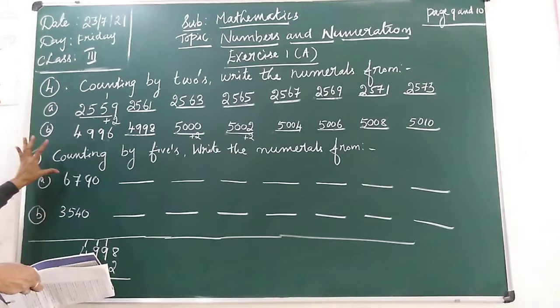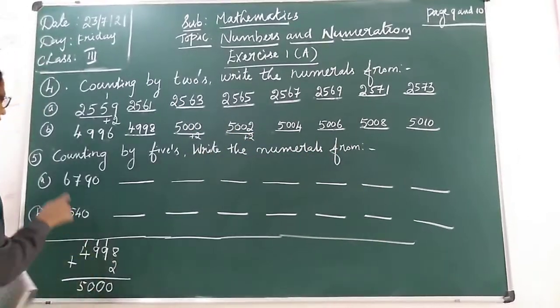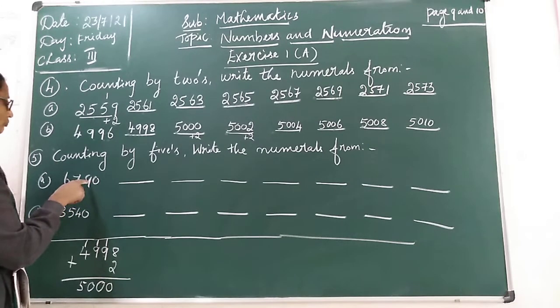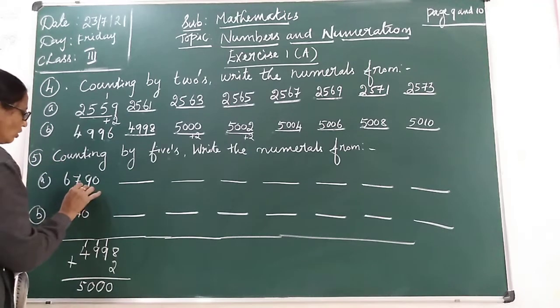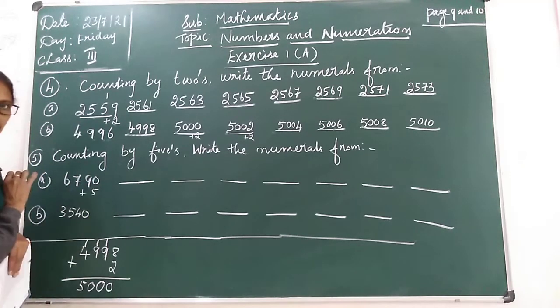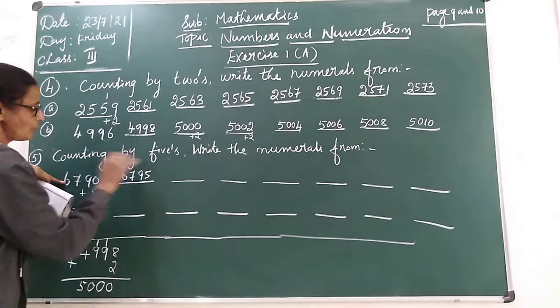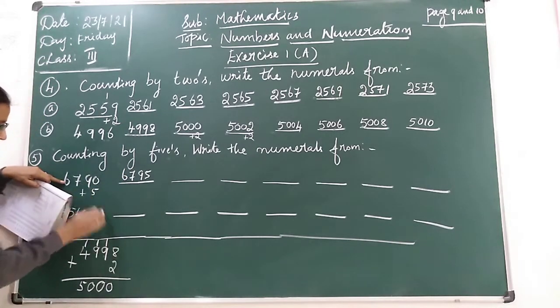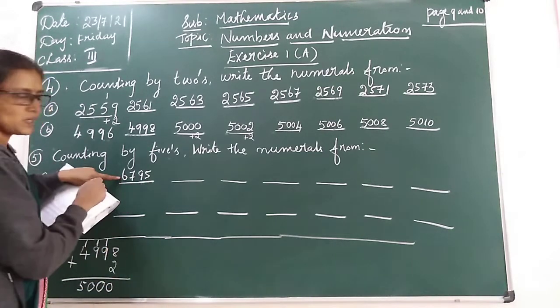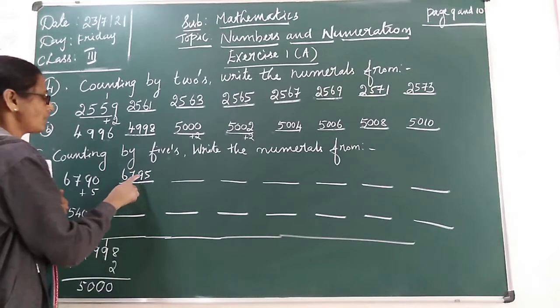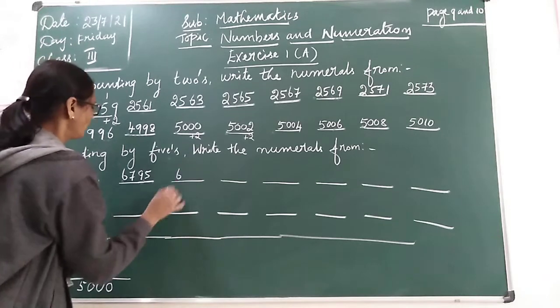So, simply counting by 5s, write the numerals from 6790. Counting by 5s children. So, you have to add 5. So, when you add 5, 6795. If you don't know, you can do addition too. Now, here 95 plus 5. So, 6795 plus 5 is 6800.